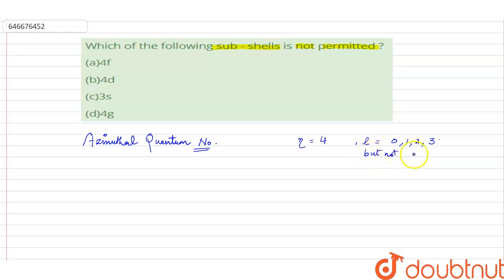Not equal to or more than 4. If the value of l is equal to or more than 4, then it will not be permitted. So we'll see the options one by one. Option A: we have 4f.